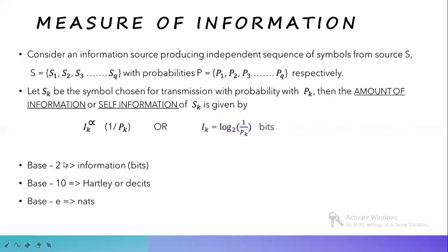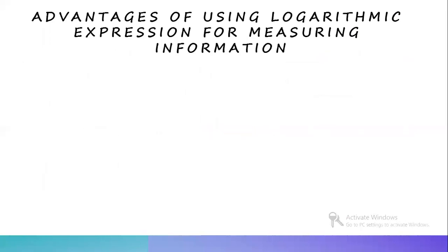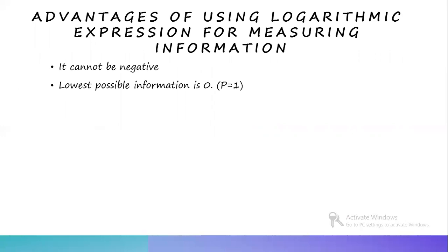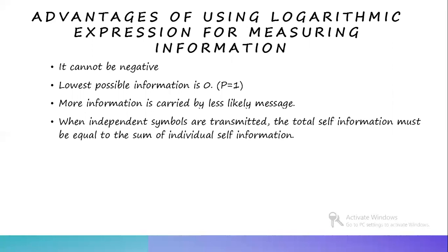When considering logarithm: if the base is 2, we represent it in bits; if base 10, in Hartley; and if base e, in Nats. Why use a logarithmic expression? First, information cannot be negative — the self-information of any message cannot be negative and each message must contain a certain amount of information. Second, the lowest possible self-information is 0, which means the event is sure to occur, i.e., probability equals 1. Third, more information is carried by a less likely message. Fourth, when independent symbols are transmitted, the total self-information must equal the sum of individual self-informations. These are the advantages of using logarithmic expressions for measuring information.